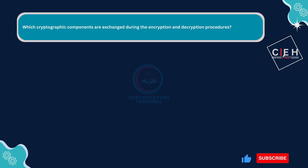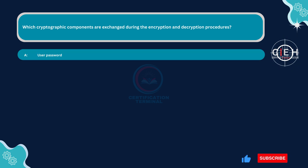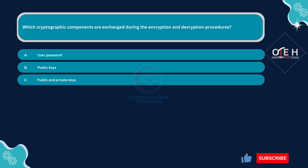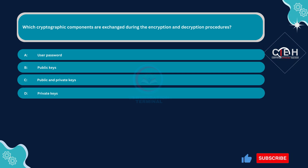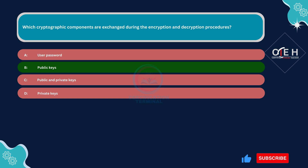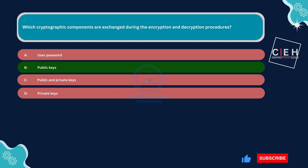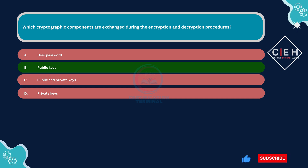Next question. Which cryptographic components are exchanged during the encryption and decryption procedures? Option A: user password. Option B: public keys. Option C: public and private keys. Option D: private keys. The correct answer is Option B: public keys. In summary, asymmetric encryption relies on a pair of keys — a public key for encryption and a private key for decryption. The public key is shared with others, allowing them to send encrypted messages to the owner of the key. The private key is kept secret and used by the owner to decrypt messages encrypted with their public key. User passwords are not directly involved in the encryption and decryption processes, but are used for authentication and key derivation in securing communication channels.